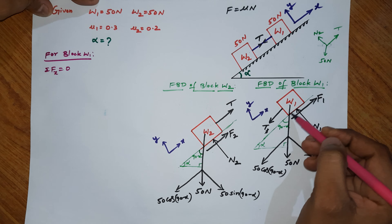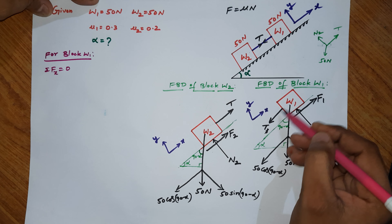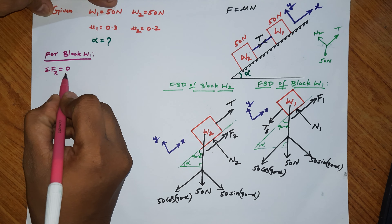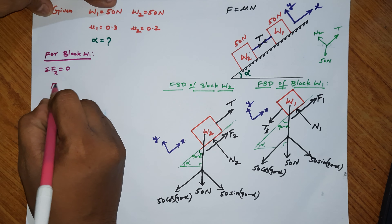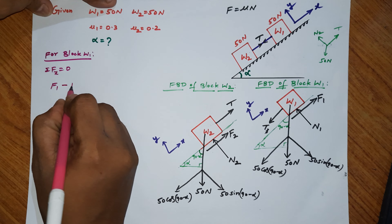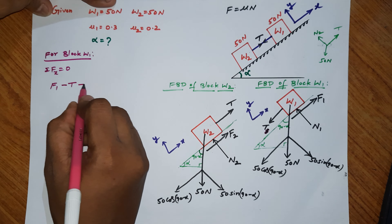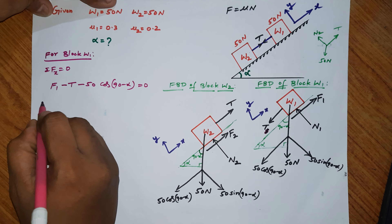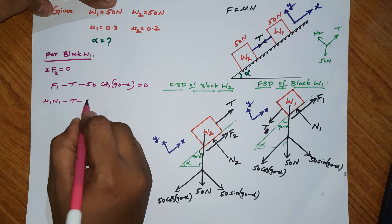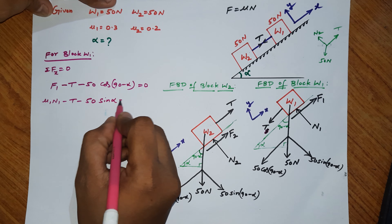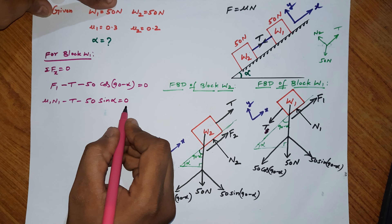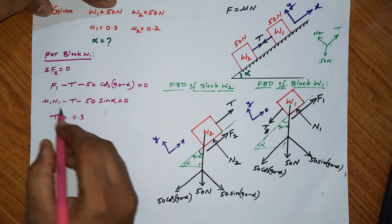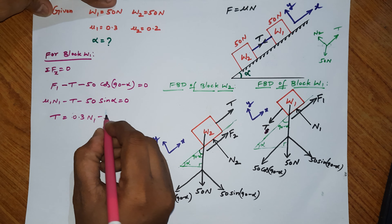Applying Sigma Fx = 0: F1 minus T minus 50 cos(90 minus alpha) = 0. Since F1 = mu1 × N1, we get: mu1 × N1 minus T minus 50 sin(alpha) = 0. Therefore T = mu1 × N1 minus 50 sin(alpha) = 0.3 × N1 minus 50 sin(alpha). We need N1, so we apply the next equilibrium equation.